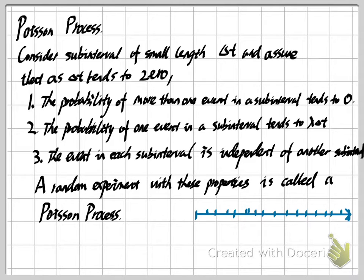For the customers, when they arrive, their arrivals are independent of each other — they didn't coordinate with one another. Also, the longer we stay at the bank watching for a customer arrival, the longer the subinterval length, the higher the chance we find a customer arrival. This is an important example of a Poisson process.